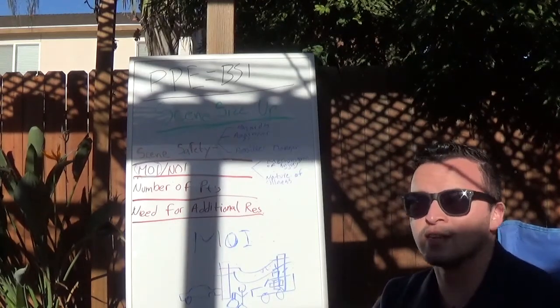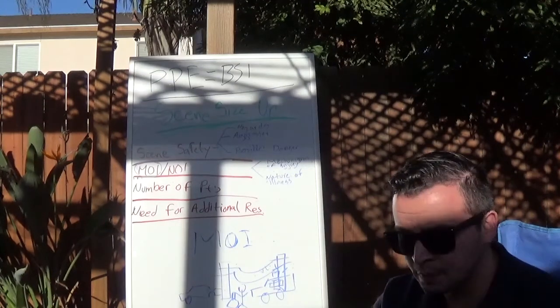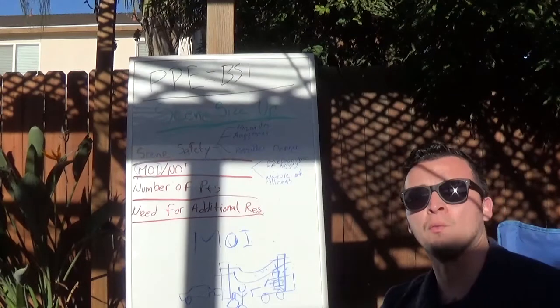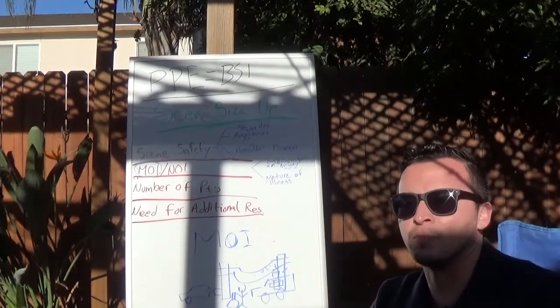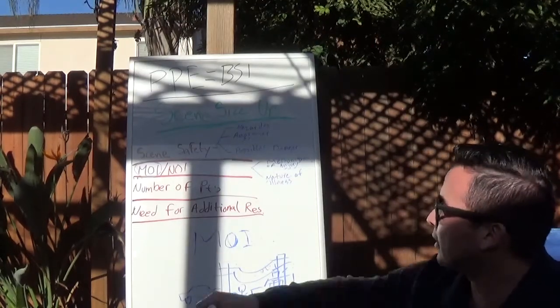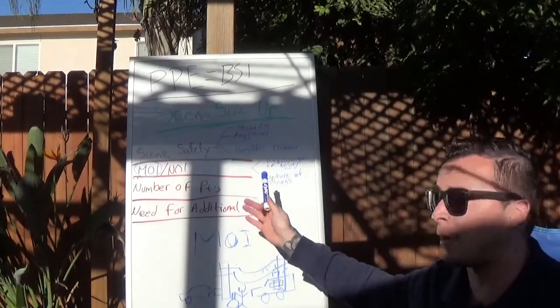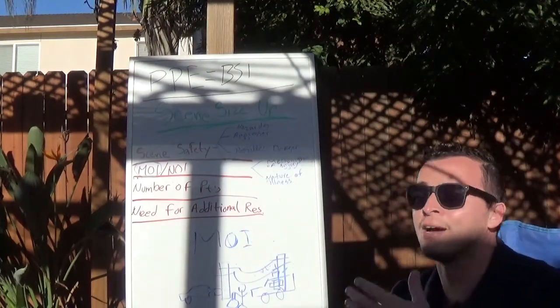Okay, so MOI is like a hint of what happened before you even see the patient. You kind of have an idea of what's going on before you even get there. That's what MOI is. It's more of a hint before you even get to the patient as you're approaching the scene. Okay, so we got that out of the way. So BSI, is my scene safe? What's my MOI or NOI? They're going to tell you what happened.